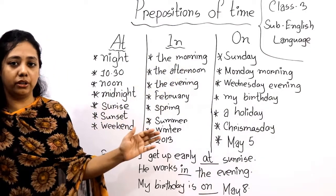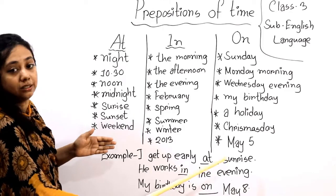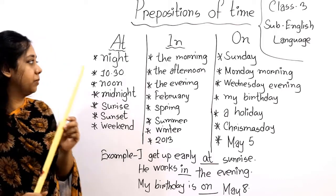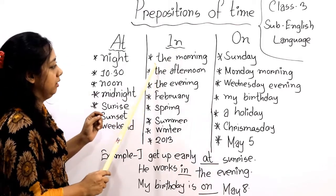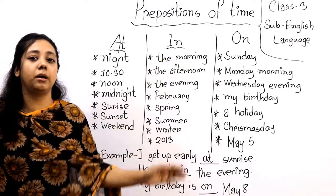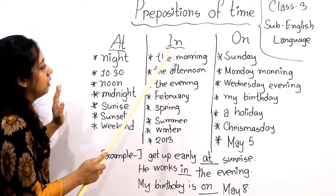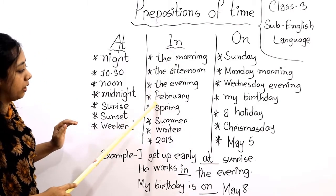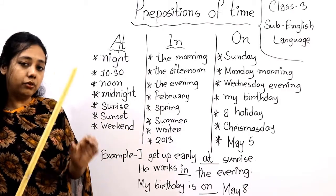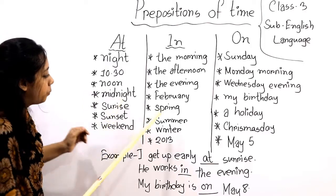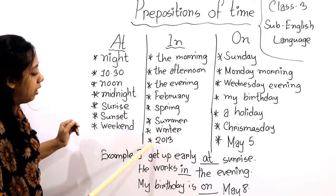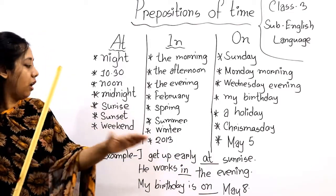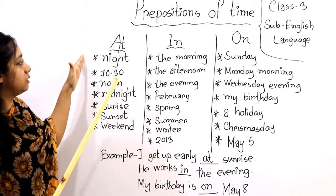'In' sits before a longer time. When I say 'in the morning,' that means the whole morning. So 'in' sits before the morning, the afternoon, the evening. February is a month, so we write 'in' before all the months. Spring, summer, winter — we write 'in' before seasons. We also write 'in' before all the years, like in 2030.